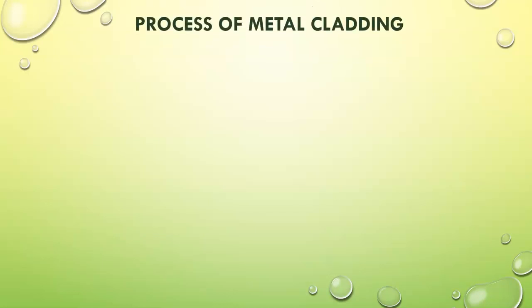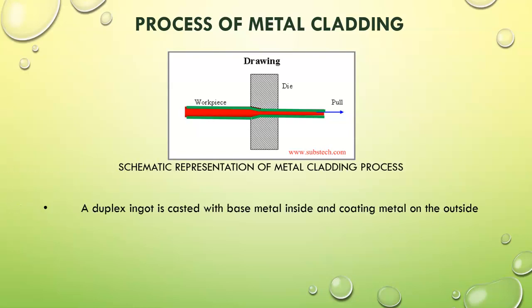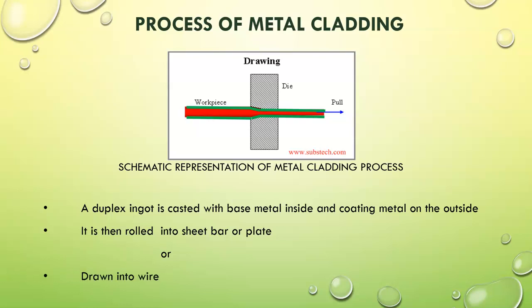There is another way by which we can carry out metal cladding. Here, an ingot is cast with base metal inside and coating metal on the outside. This ingot is then rolled into a sheet and you will have a sheet of the base metal which is cladded with the coating metal, or it is drawn into wire where the core will be of base metal while the covering will be of the cladding metal.